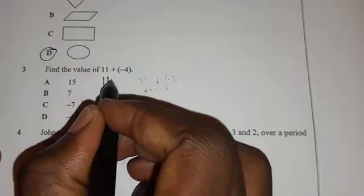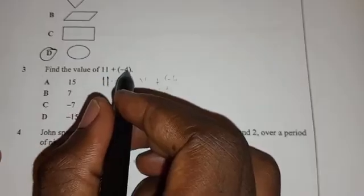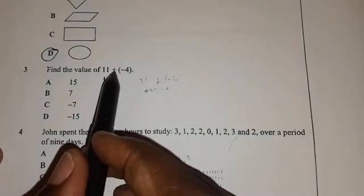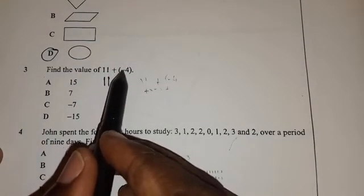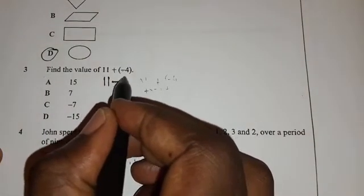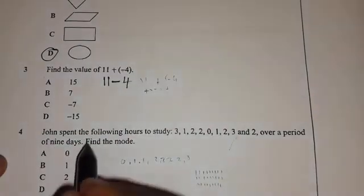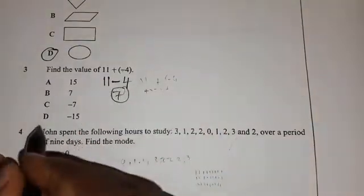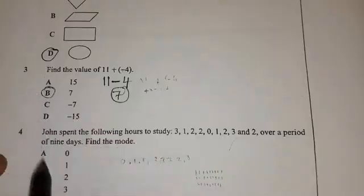Number three, find the value of 11 plus minus 4. So first of all, you need to say positive times negative, the negative will win. So we have a negative. So this is same as 11 minus 4. 11 minus 4 is 7. So the answer is this one, positive 7.